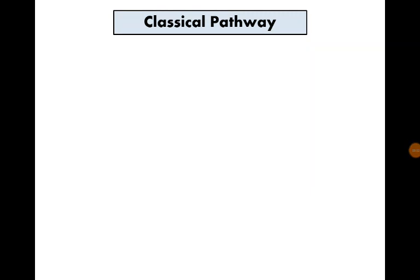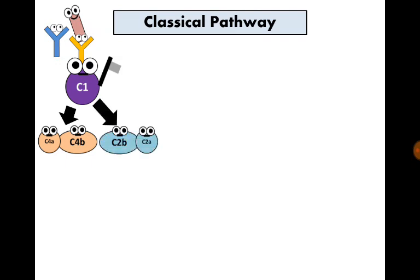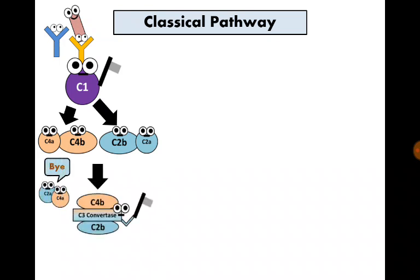Let's start with the classical pathway. The trigger is attachment between immunoglobulin G or immunoglobulin M to an antigen. This binding will activate complement factor 1, which is present in serum, or C1. C1 will cleave C4 into C4A and C4B, and C2 into C2A and C2B. We don't need the smaller C2A and C4A. However, C4B and C2B will unite together to form a new enzyme called C3 convertase.